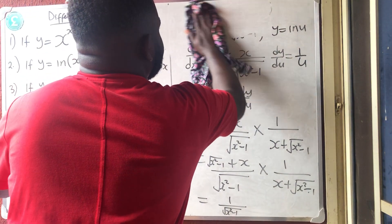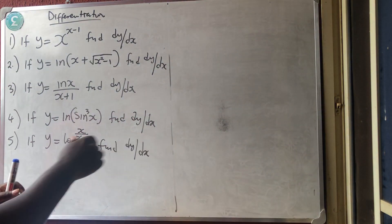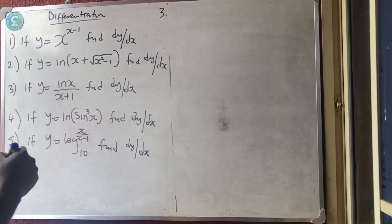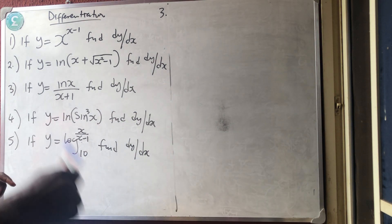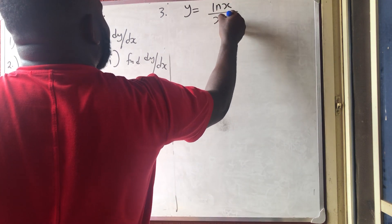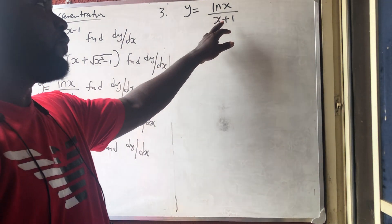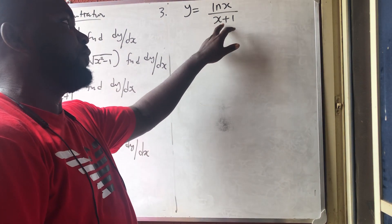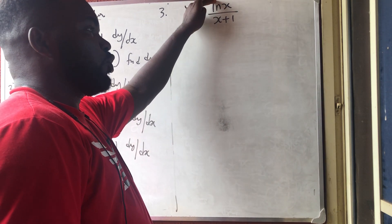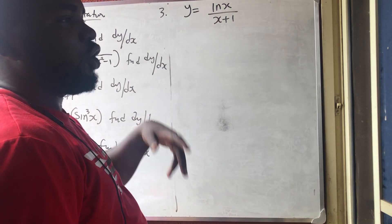Number 3: we have y equal to ln(x over x+1). This is quotient rule. The shortcut says: leave the denominator, differentiate the numerator, minus leave the numerator, differentiate the denominator, all over denominator squared.